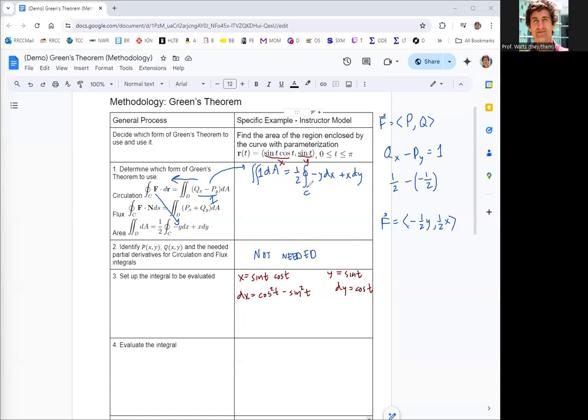Then we just put those four things into the integral. We know it goes from zero to pi. There's a one half out front, then it's negative y, so negative sine t, and then the dx, cosine squared minus sine squared. Then plus x sine cosine, and then dy, which is another cosine, and we're integrating with respect to t.